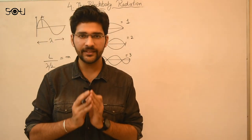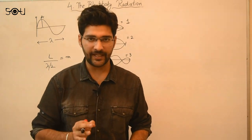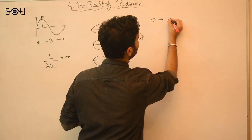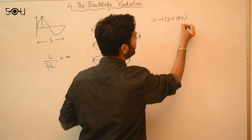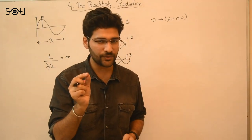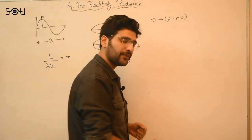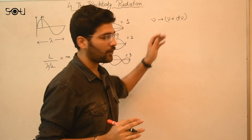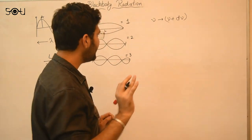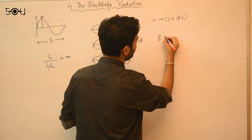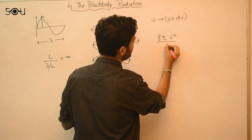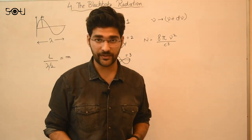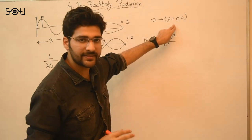So we have to calculate the number of standing waves in this small frequency range between ν and ν + dν. Rayleigh and Jeans calculated that and came up with a number: 8πν²/c³. This is the number of standing waves, or the number of modes of vibration, present in this small frequency range.